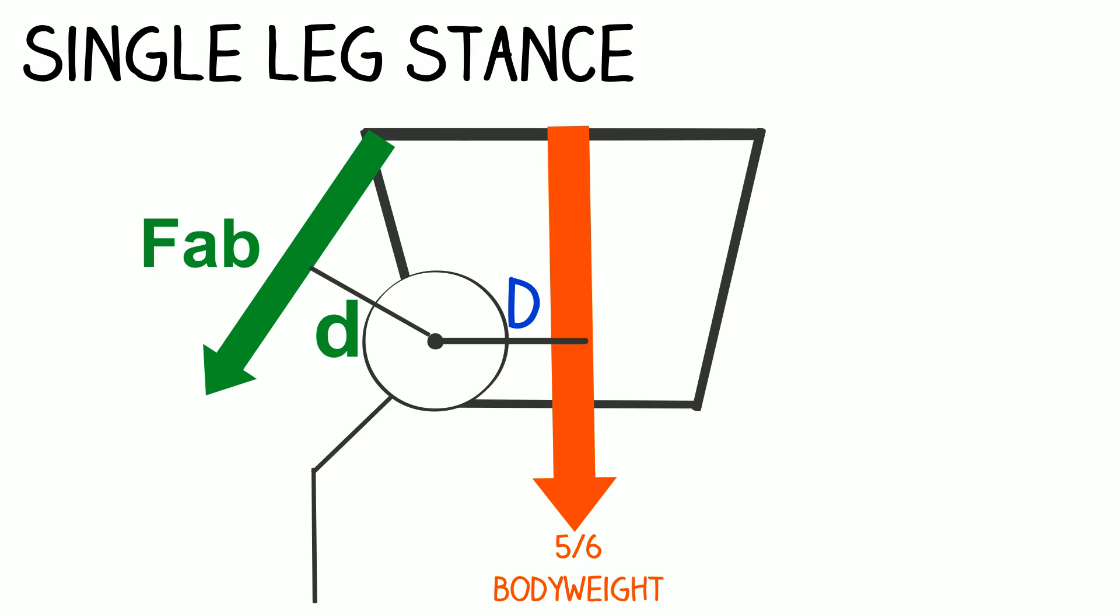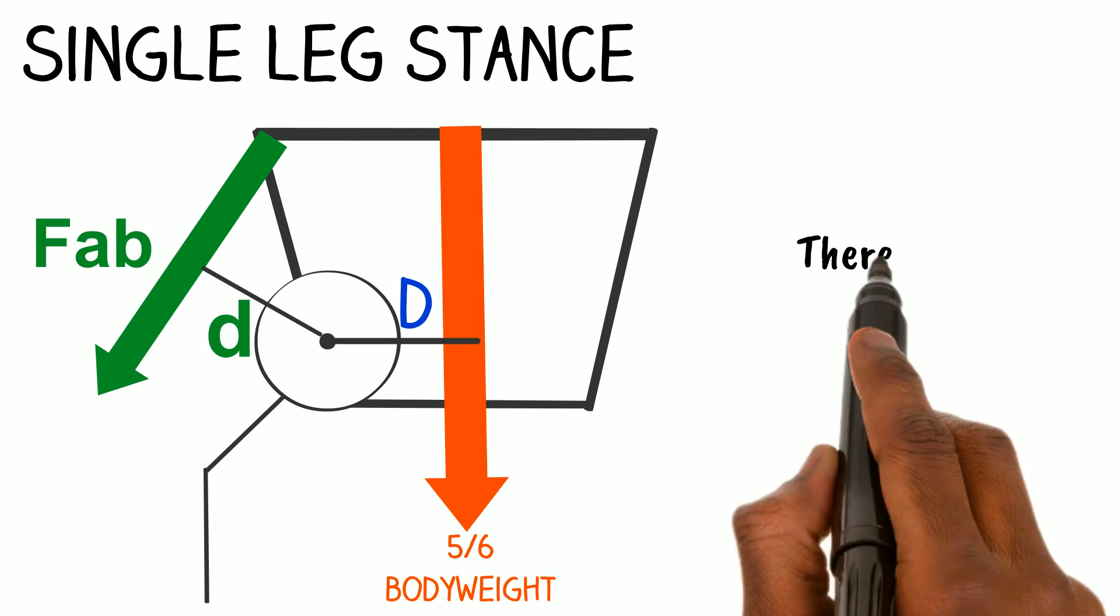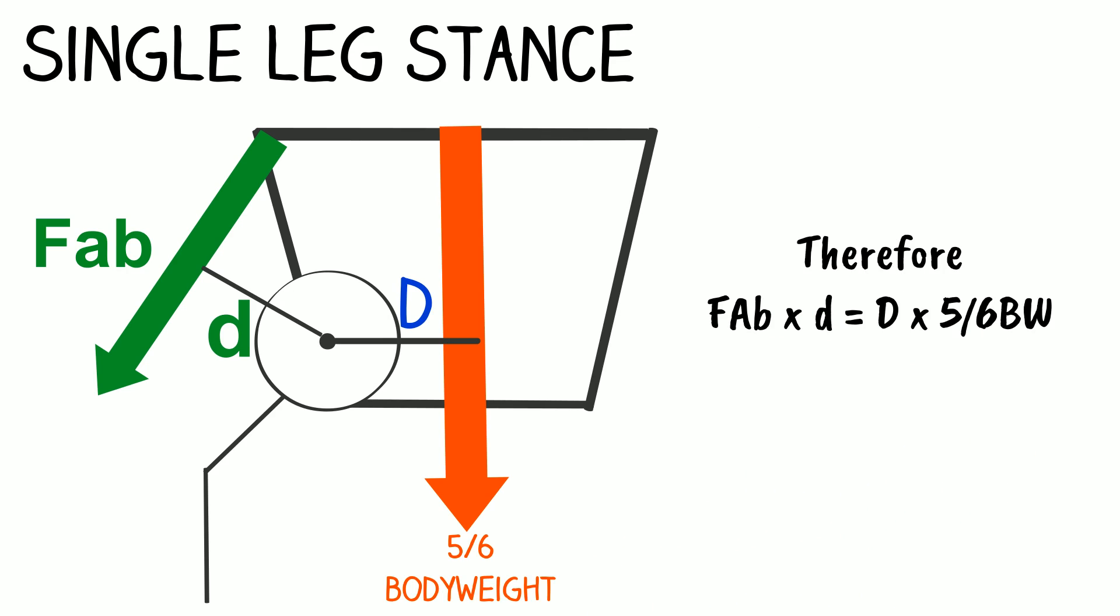Therefore in a state of equilibrium the anti-clockwise moment is equal to the clockwise moment, hence, FAB times little d equals capital D times five-sixths body weight.